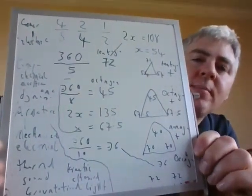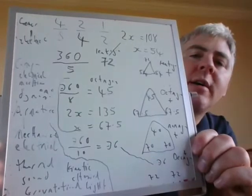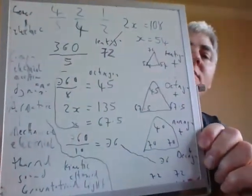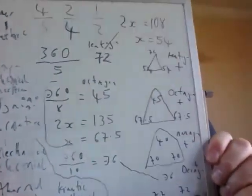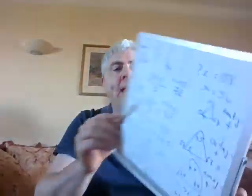For the octagon: 360 divided by 8 equals 45. 2x equals 135, so x equals 67.5. In the triangle, 45 is at the top and there are two 67.5s at the bottom.